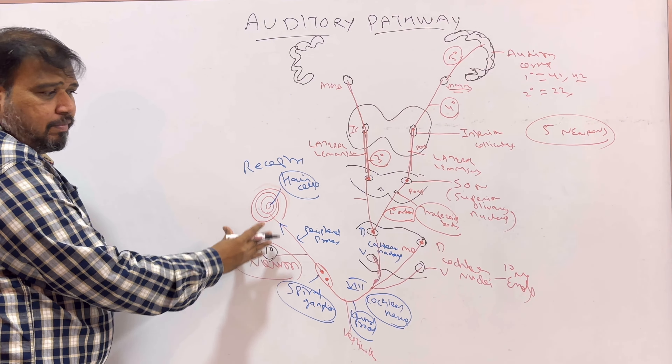Please note this mnemonic: E. coli MA. E for eighth nerve, which is the cochlear nerve. C for cochlear nuclei — both dorsal and ventral. O for superior olivary nucleus. L for lateral lemniscus. I for inferior colliculus. M for medial geniculate body. A for auditory cortex.